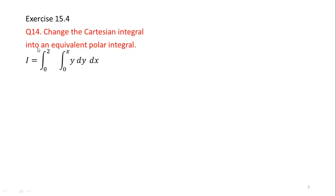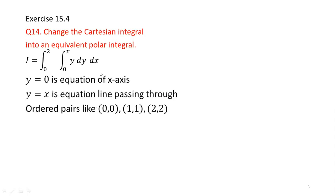Next, we will learn how we can change this Cartesian integral into a polar integral. This question is question number 14 from exercise 15.4 of Thomas Calculus 12th edition. In order to convert this Cartesian integral into an equivalent polar integral, first of all we will sketch our region. In order to sketch the region, we need the boundaries, which are obtained from the limiting values of the variables.